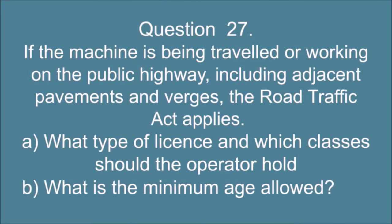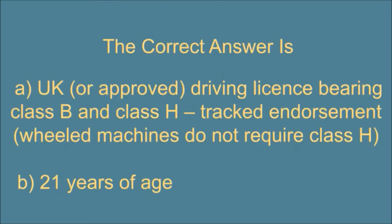Question 27. If the machine is being traveled or working on the public highway, including adjacent pavements and verges, the Road Traffic Act applies. A) What type of license and which classes should the operator hold? B) What is the minimum age allowed? The correct answer is: A) UK or approved driving license bearing Class B and Class H tracked endorsement, wheeled machines do not require Class H, and B) 21 years of age.